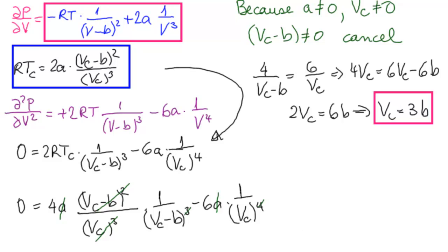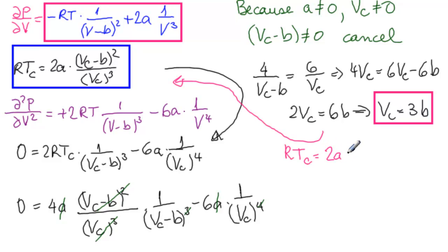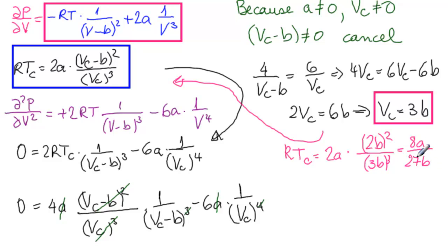Substituting VC equals 3B back into the expression for RTC: RTC equals 2A times (3B minus B) squared over (3B) cubed, which simplifies to 2A times 4B² over 27B³, giving TC equals 8A over 27BR.